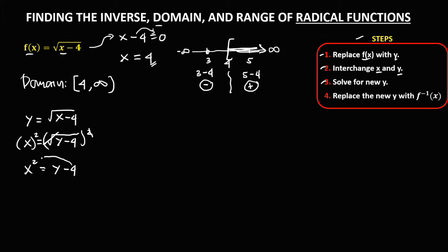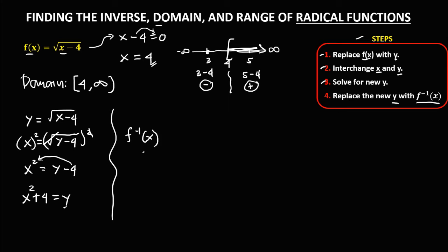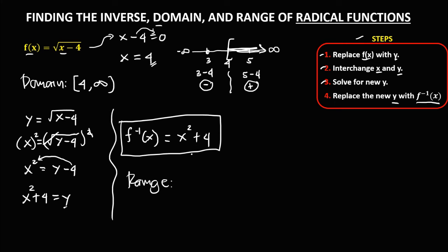To solve for y, transpose the negative 4 so it becomes positive 4. We now have x squared plus 4 equals y. Then replace the new y with the inverse notation: f⁻¹(x) equals x squared plus 4. This is the inverse of the given radical function. From the inverse, to find the range — since there is no variable in the denominator, the range is from negative infinity to positive infinity, or all real numbers.